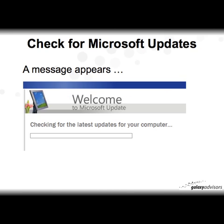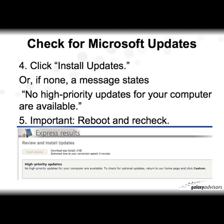Once you click on Express, it's going to go off and check your computer to see what updates you have available. A little green bar is going to go back and forth. It might take several minutes depending on how many updates you have. Then you're going to eventually get the Express results. If you have results, it'll say install updates, it'll tell you how many updates you need to install, and go ahead and click the updates and go through the process of installing all your Microsoft updates.